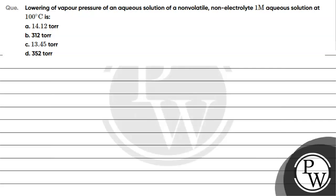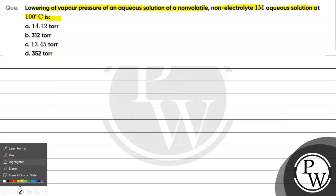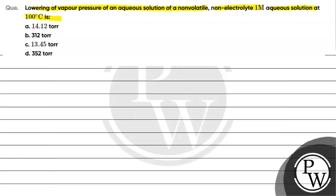Hello students, let's read this question. The question says: lowering of vapor pressure of an aqueous solution of non-volatile non-electrolyte — one molar aqueous solution at 100 degrees Celsius. Option A: 14.12 torr, Option B: 312 torr, Option C: 13.45 torr, Option D: 352 torr.